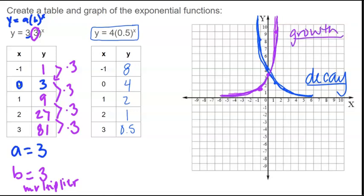And really that depends on your b value. So here the b value was 3. As a big whole number, you're multiplying by 3. It's going to make numbers get bigger. So that is a growth function.